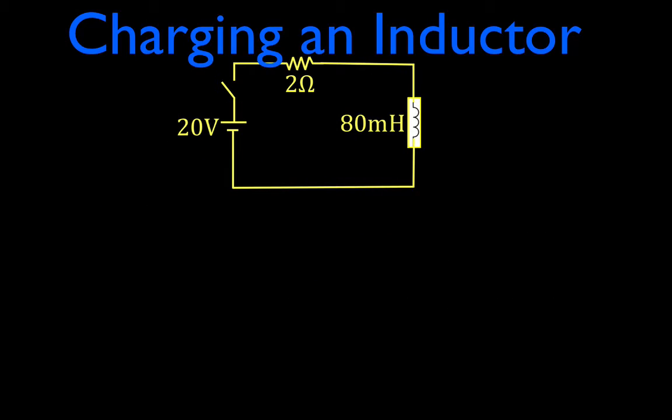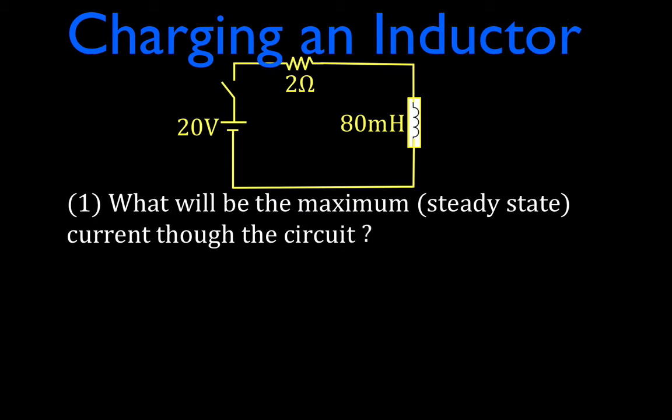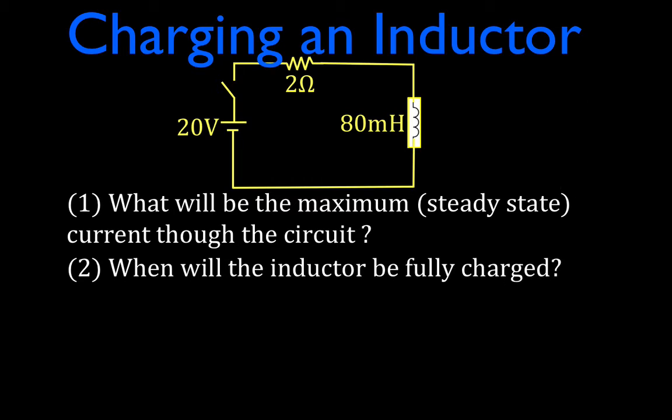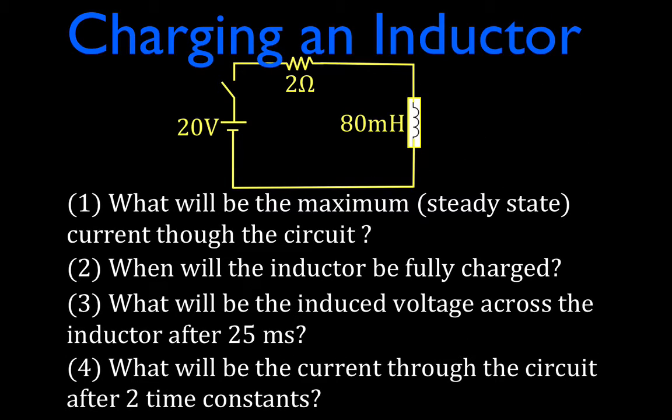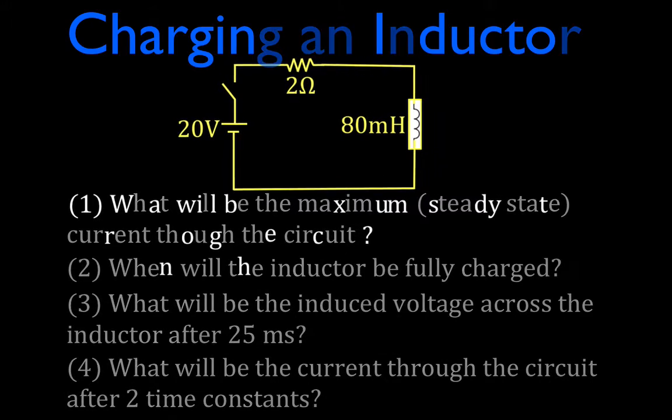This is the circuit we're going to use. We're going to be charging an inductor in an RL circuit and these are the four things we're going to do. We're going to determine what the maximum or steady state current will be through the circuit. We are going to determine when the inductor will be fully charged. We are going to determine what will be the induced voltage across the inductor after 25 milliseconds. And the fourth thing is we will determine what the current will be through the circuit after two time constants. So let's just get started.